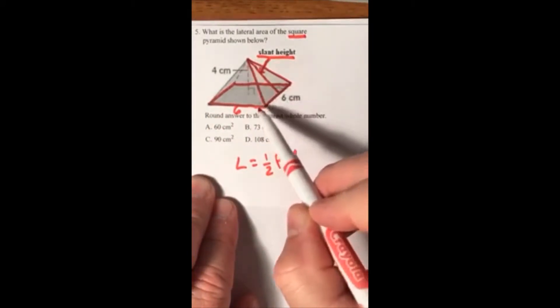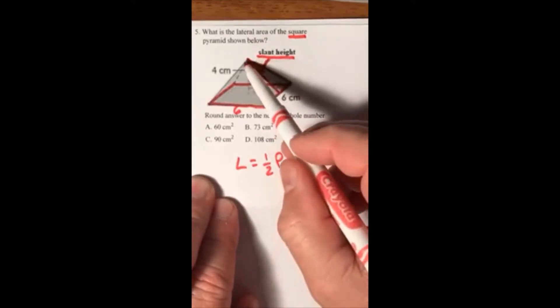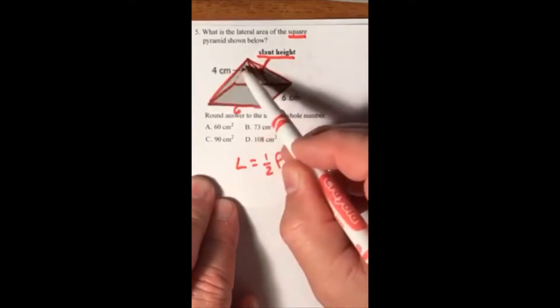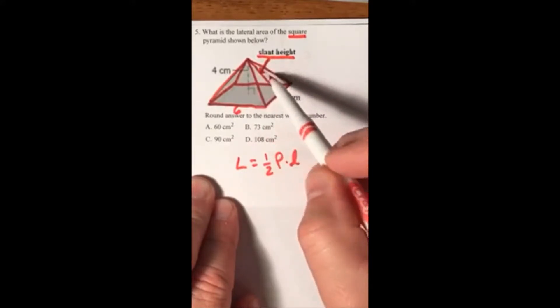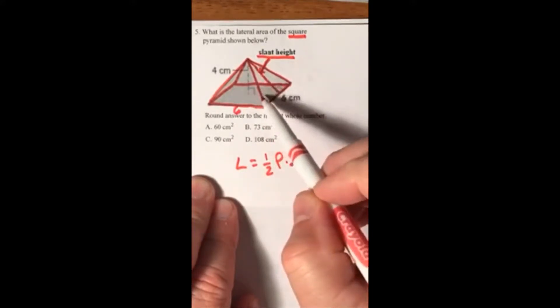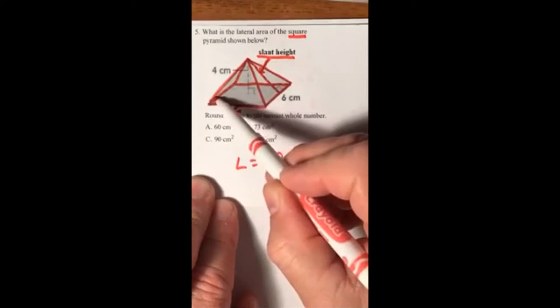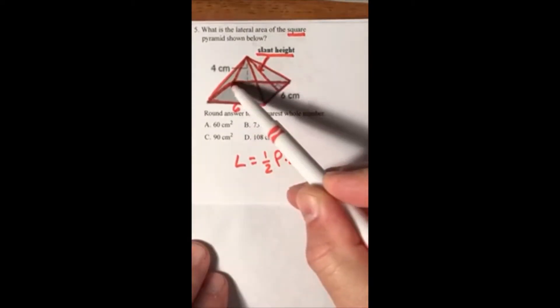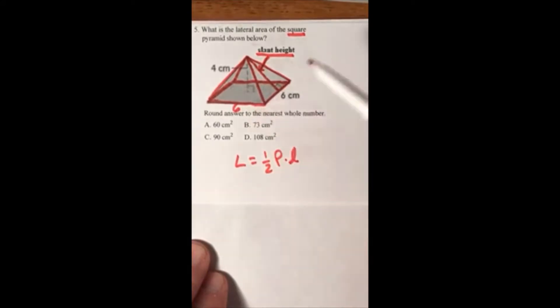Because this is a square, all of these triangles—there's four triangles. We've got one out to the right, one out front, one to the side, and one in the back. They're all the same. If you find the perimeter, then you would have the base for all four triangles, and then all you have to do is multiply by the height of one of them.